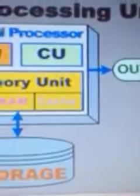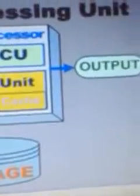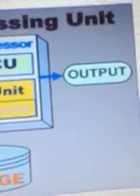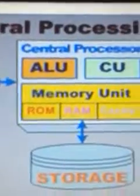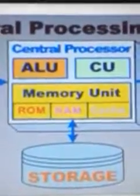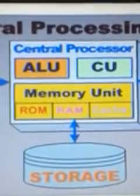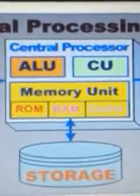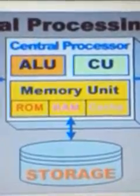There is also an output box which represents the output devices, or output digital modules, that are connected to the central processor. For further explanation of these units, you may see my next videos.